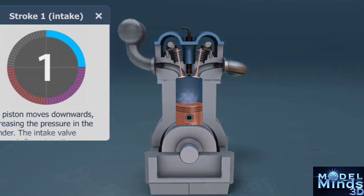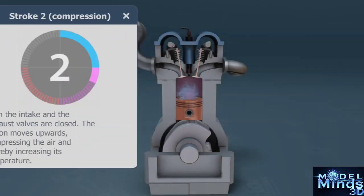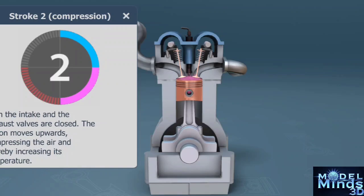But raw spin isn't enough. The gearbox steps in as translator. Low gears are muscle-bound giants, trading speed for raw power to climb hills. High gears are sleek marathoners, sipping fuel at cruising speeds.